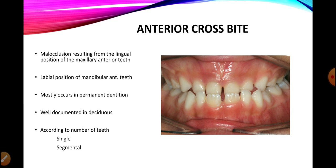It can be because of the lingual positioning of maxillary teeth or the labial positioning of mandibular teeth. It mostly occurs in the permanent dentition but may be seen in the deciduous dentition as well. Anterior crossbite can be further classified as a single tooth anterior crossbite or a segmental anterior crossbite. If a single tooth is involved in the crossbite it is known as a single tooth crossbite.